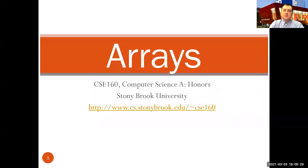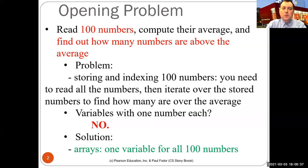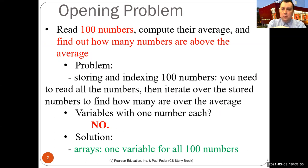Arrays are the first data structure we will encounter in this class. We start with the opening problem: we want to read 100 numbers, compute their average, and find how many numbers are above that average. The problem is that you don't know the average until you've read all 100 numbers. Once you have all 100 numbers you can compute the average, but then you need the 100 numbers again to find how many are above that average. So we have a problem of storing and indexing 100 numbers.